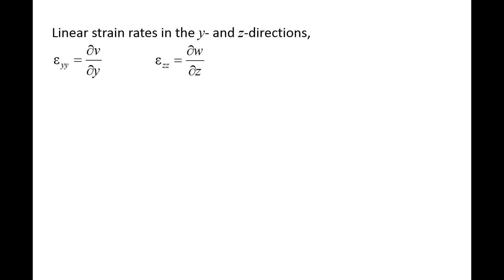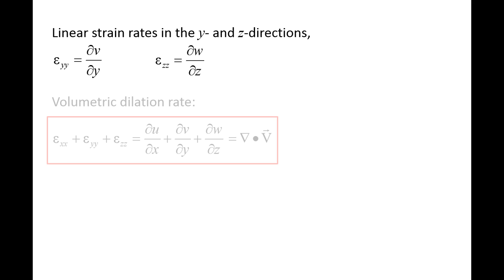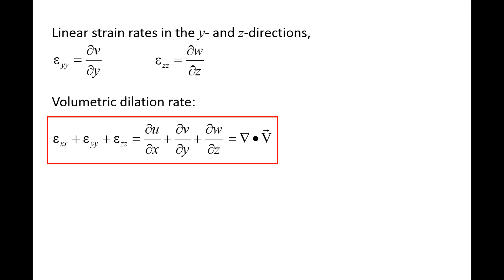It is possible to have velocity gradients in all three directions simultaneously. As we have discussed, the velocity gradients can be related to the time rate of change of the fluid element's volume. Therefore, the volumetric dilation rate — the total rate of change in a fluid element's volume — is the sum of the linear strain rates in all three directions: ε_xx + ε_yy + ε_zz = ∂u/∂x + ∂v/∂y + ∂w/∂z. This expression is also equal to the divergence of the velocity field.